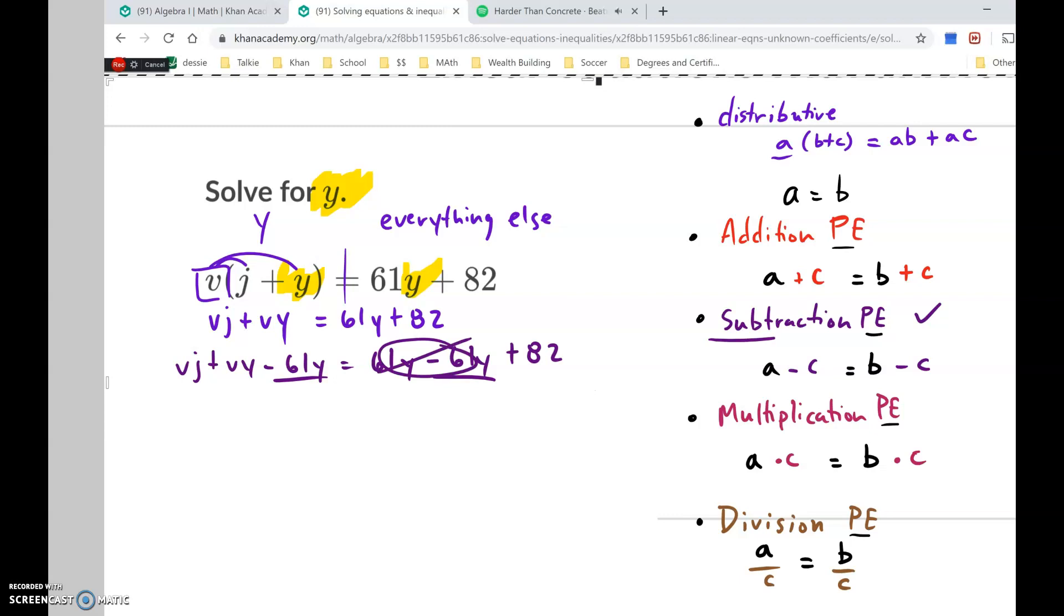And here, I can't really combine like terms because v and negative 61, although they both have a y, we can't combine. Now that I've got the y's on both sides, I want to get rid of everything else that's on the y side. So I want to start by getting rid of this vj and the vj is positive. So again, I'm going to subtract. I'm going to subtract the vj. So we've got that vj right there minus vj plus vy minus 61y equals 82 minus vj. You've got to subtract that evenly. I'm just going to highlight what I just did to both sides. Now we can simplify this. We know that this is going to zero out.